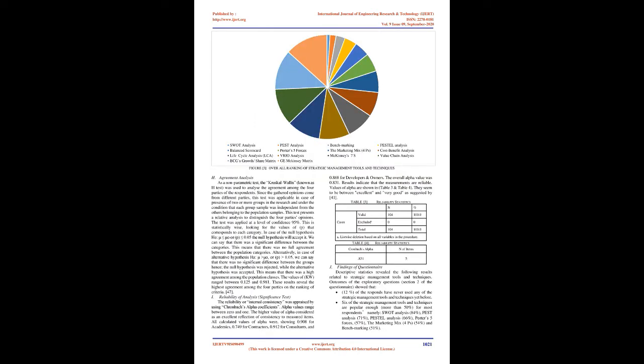A self-administered questionnaire was designed to gather primary data. Questionnaires are widely used for descriptive and analytical surveys to find facts, opinions, and views, and can provide results that are easily quantified and analyzed statistically. The questionnaire was composed of the following sections: Section 1 requests personal information about the respondent and their firm; Section 2 contains a list of common strategic planning tools with an overview of the definition, origin, background, applications, and purpose of each tool and technique — with an appendix attached; Section 3 represents the main body of the questionnaire designed to receive respondents' opinions about the predetermined criteria to examine the strategic management tools and techniques.